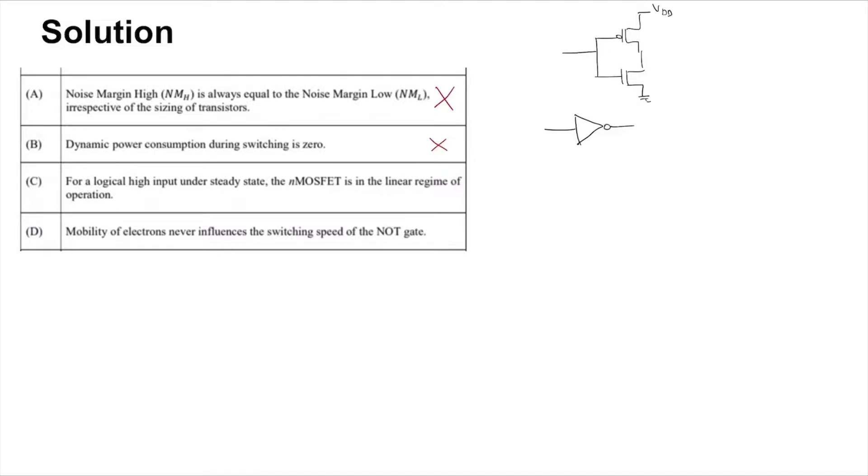So the current is always μn Cox W/L into something based on the region. So this μn directly influences the drain current of the NMOS.